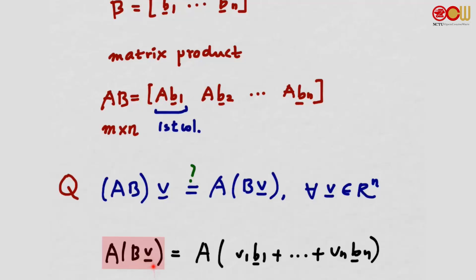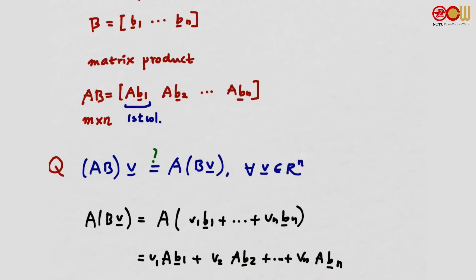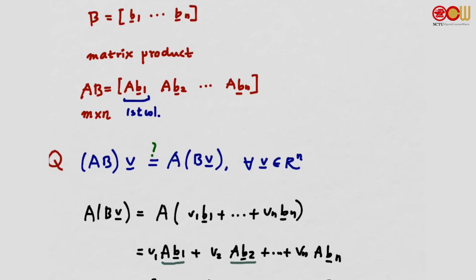On the right-hand side, we have BV, the matrix-vector product, which equals V1·B1 plus ... plus VN·BN — a linear combination of the columns of B, with the entries of V as coefficients. Using the distributive law, we can multiply A with each of these terms and add them up, getting V1·AB1 + V2·AB2 + ... + VN·ABN. This is again a linear combination, where the vectors are AB1, AB2, ..., ABN, and the coefficients are V1 through VN.